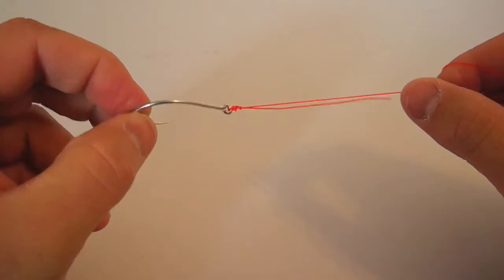And really the knot's going to look something like that. This is like 25 pound line so it's very thick and doesn't really snug down well. And that's the improved clinch knot.